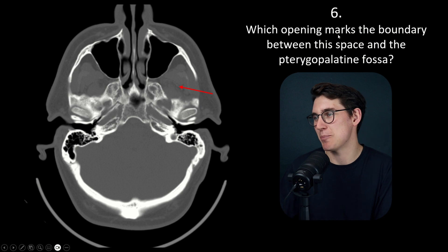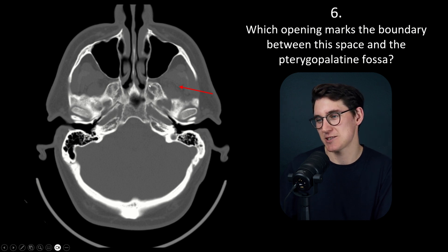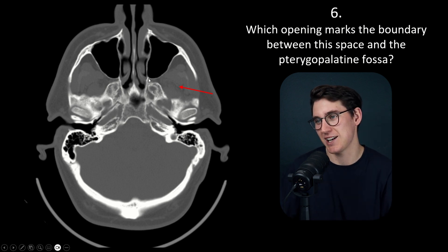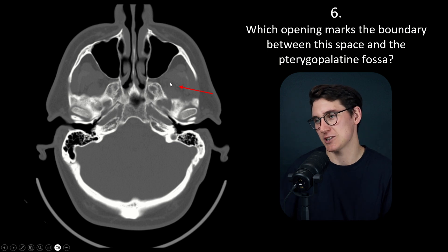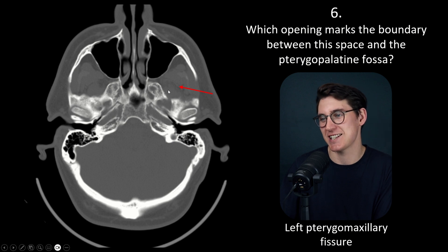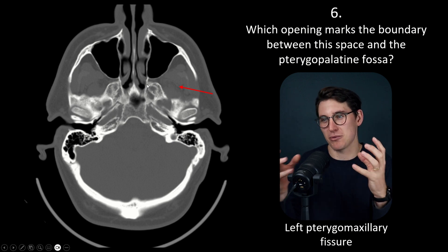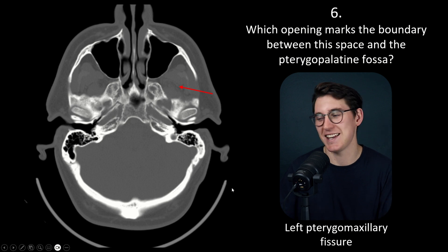Question 6 asks which opening marks the boundary between this space and the pterygopalatine fossa. The pterygopalatine fossa has defined borders: anteriorly the posterior aspect of the maxilla and maxillary sinus, medially the palatine bone, and posteriorly the pterygoid process of the sphenoid bone. Laterally there isn't a defined border — it's just an opening into the infratemporal fossa. This opening is known as the pterygomaxillary fissure, specifically the left pterygomaxillary fissure. This is where the maxillary artery enters the pterygopalatine fossa. Remember, that fossa is mainly made up of fat and is a good review area when looking for masses.